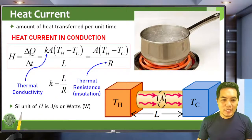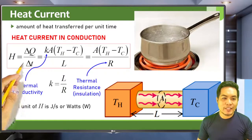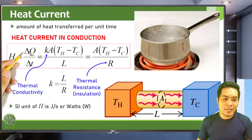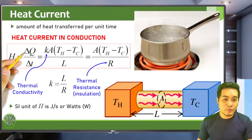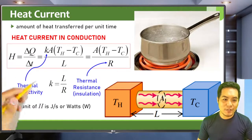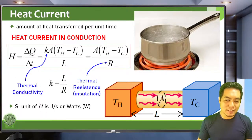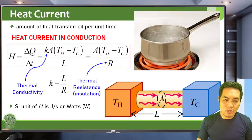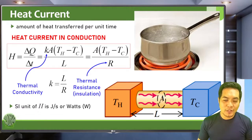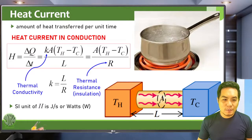The standard unit of heat current is heat over time. Since heat can be measured in joules, the unit is joules per second. Joules per second is collectively known as watts — the same unit as power. So the unit for heat current is joules per second or watts.